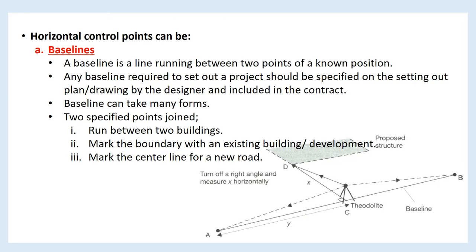Horizontal control points can take the form of baselines. A baseline is a line running between two points of a known position. Any baseline required to set out a project should be specified on the setting out plan or drawing by the designer and included in the contract. Baselines can take many forms: running between two buildings, marking the boundary with an existing building or development, or marking the center line for a new road.